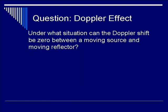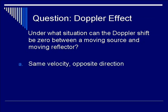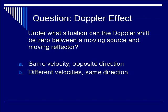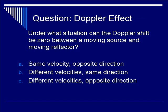Let's do a question to test your knowledge. Under what situation can the Doppler shift be zero between a moving source and a moving reflector? A: same velocity, opposite direction; B: different velocity, same direction; C: different velocities, opposite direction; or D: same velocity, same direction. The correct answer is D — same velocity, same direction.